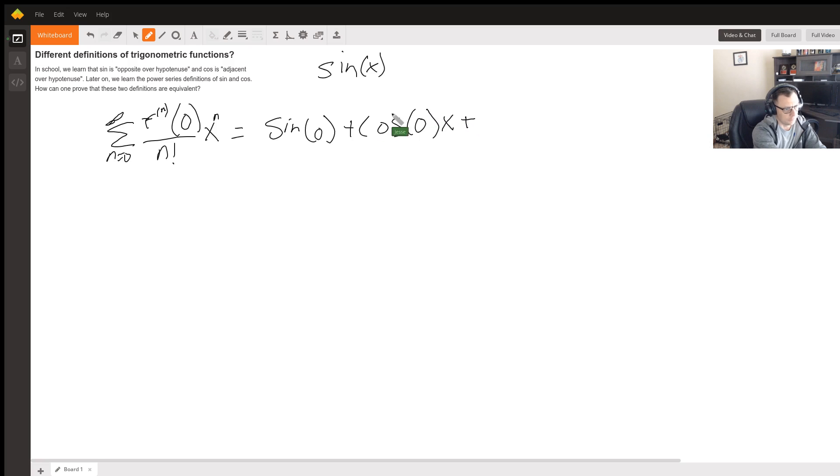And if you can just continue this, derivative of cosine is going to be negative sine. So we're going to do minus and it's going to be sine of zero. It's going to be over, this was zero factorial, one factorial, this would be two factorial, and then it's going to be x squared.